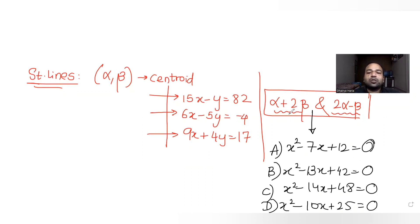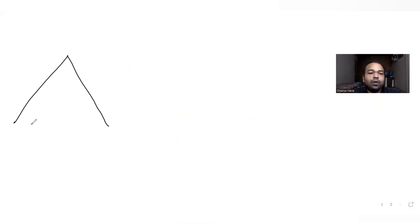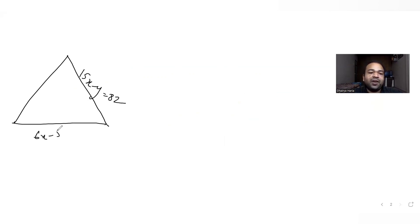We need to figure out which quadratic equation is correct, with roots alpha plus 2 beta and 2 alpha minus beta. First, we need the values of alpha and beta, and to find those we need the vertices of the triangle. The three line equations are: 15x minus y equal to 82, 6x minus 5y equal to minus 4, and 9x plus 5y.